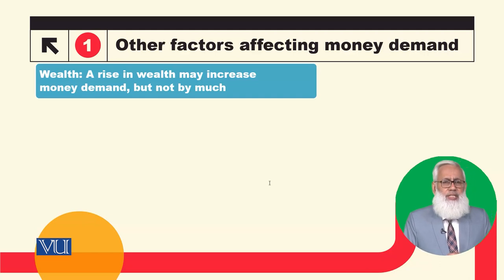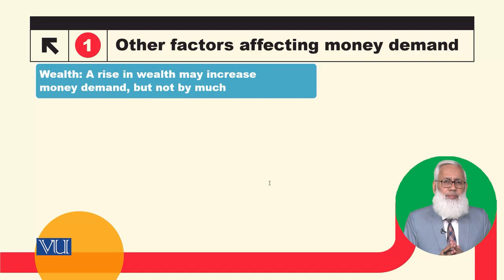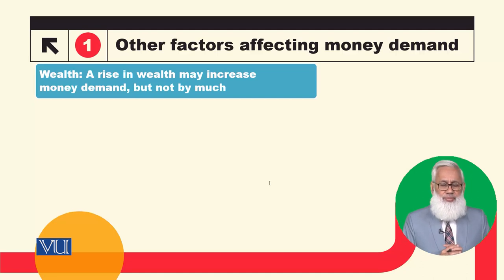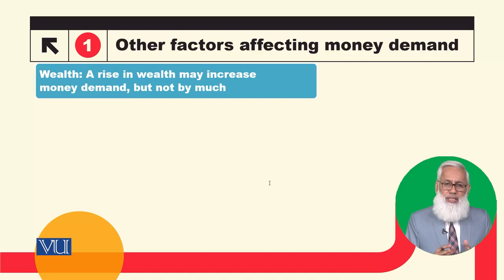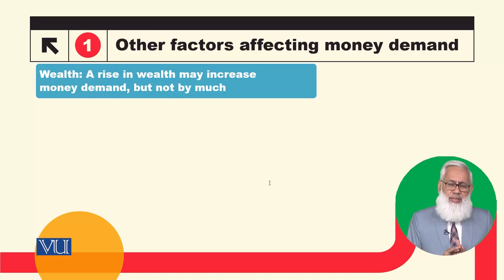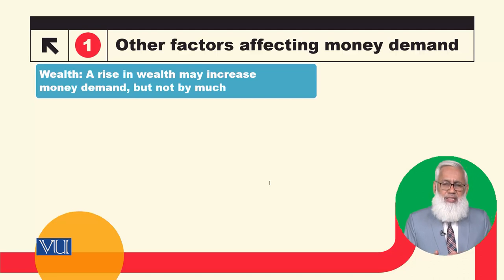पहला determinant जो आज हम discuss करेंगे वो है wealth। Income को तो हमने शामिल किया था और discuss किया था कि income के increase होने से money demand increase हो जाती है। लेकिन wealth के increase होने से भी money demand increase हो जाएगी। अगर दो लोगों की income एक जैसी है लेकिन wealth different है, तो जो ज्यादा wealthy होगा वो ज्यादा transactions करेगा, ज्यादा खर्च करेगा, ज्यादा money demand करेगा।